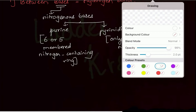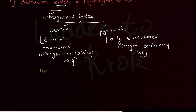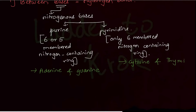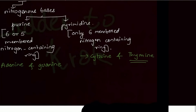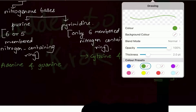Examples of purines are adenine and guanine. Pyrimidines are cytosine and thymine. Thymine is present in DNA, but in RNA, thymine is replaced by uracil — so in RNA, uracil is present instead of thymine.